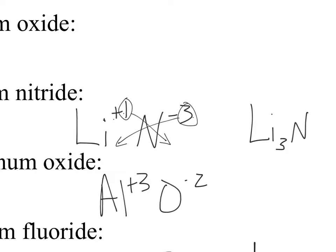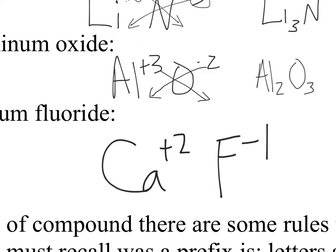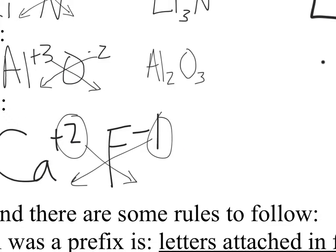Aluminum has to give up three electrons, and oxygen can only take in two, so it takes two aluminum atoms bonding with three oxygen atoms — giving Al₂O₃. For calcium and fluorine: calcium has two to give up, but fluorine can only take in one, so it takes two fluorine atoms to bond with one calcium — giving CaF₂.